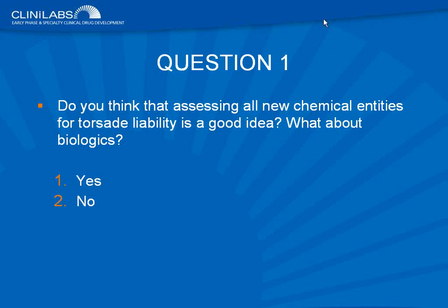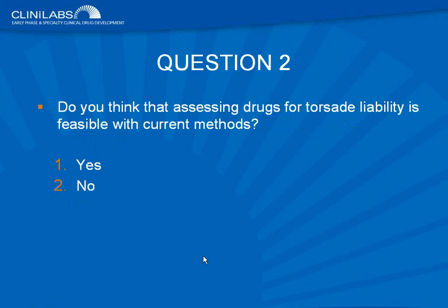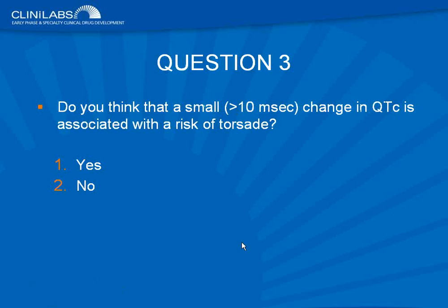I'm going to ask a few almost rhetorical questions at the beginning of this talk because they help to really focus the main issues. The first is, do you think that looking at each new chemical entity that comes through a developmental pipeline for its torsad liability is a good idea, and whether or not this should apply to biologics? Do you think assessing drugs for torsad liability is feasible using current methodology? Do you think that a small change in QT interval is associated with some kind of a risk of torsad, and can that be quantified?